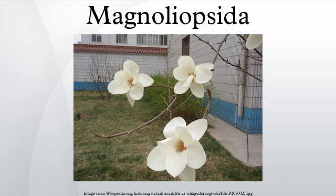The Dahlgren system and the Thorne system used the name Magnoliopsida for the flowering plants. However, the Cronquist system has been very popular and there have been many versions of the system published. In some of these Cronquist-based systems, the name Magnoliopsida refers to the flowering plants.